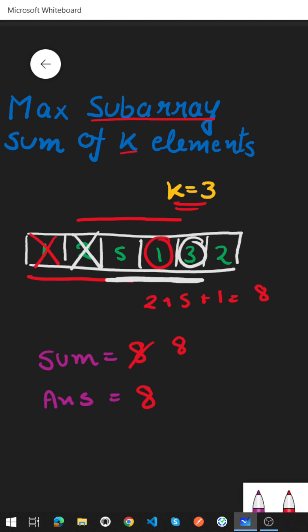5, 1 and 3 is our new window. So what is the sum inside the window? Sum inside the window is 5 plus 1 plus 3 that is 9. So we will update our sum by 9 and since 9 is greater than our maximum answer till now that is 8 so we will update our answer that is maximum sum by 9.